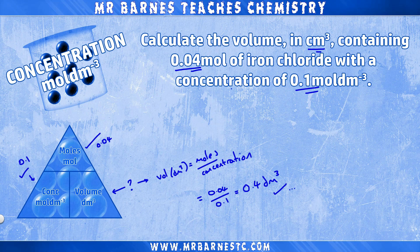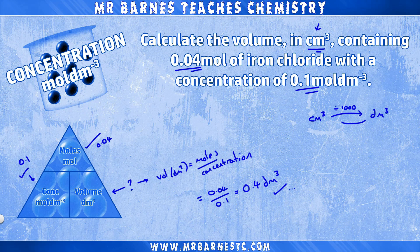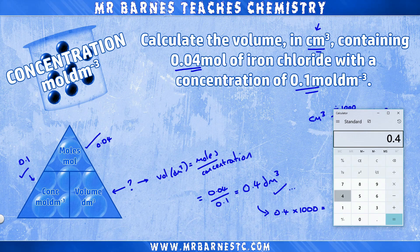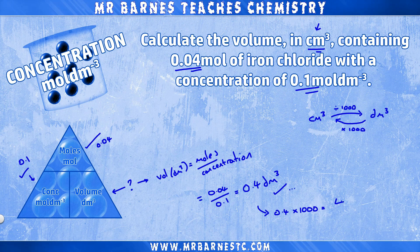However, the question is asking for the volume in centimetres cubed. To go from decimetres cubed to centimetres cubed, we multiply by a thousand, so 0.4 times 1000 comes out to 400 centimetres cubed.